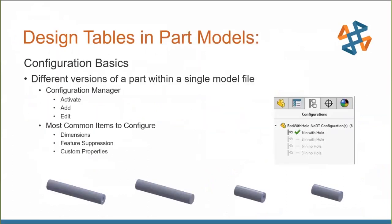If you aren't familiar, configurations are just different versions of a part within a single file. Configurations can configure most commonly dimensions — maybe you have a pipe with different length dimensions, or a version with a hole and one without. Features can also be suppressed or unsuppressed, and custom properties can be configured as well — for example, different versions of the same geometry with different materials.